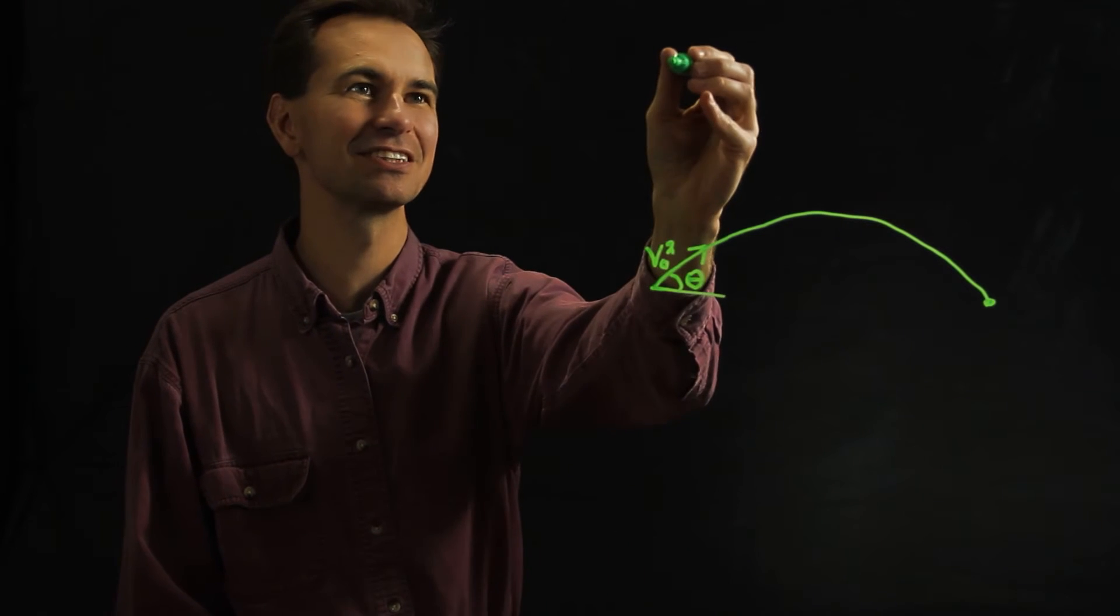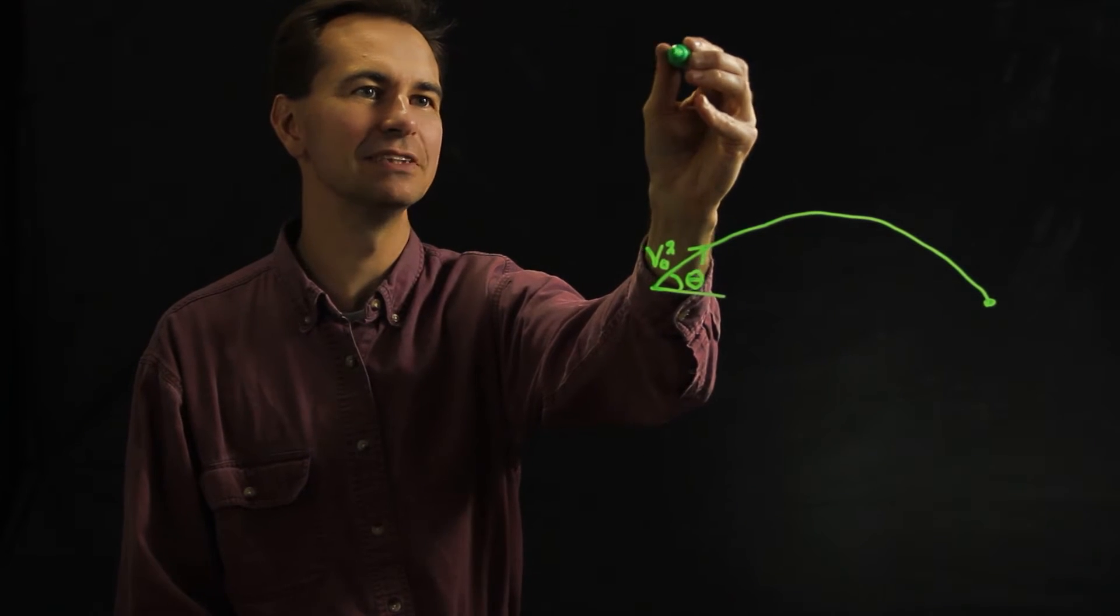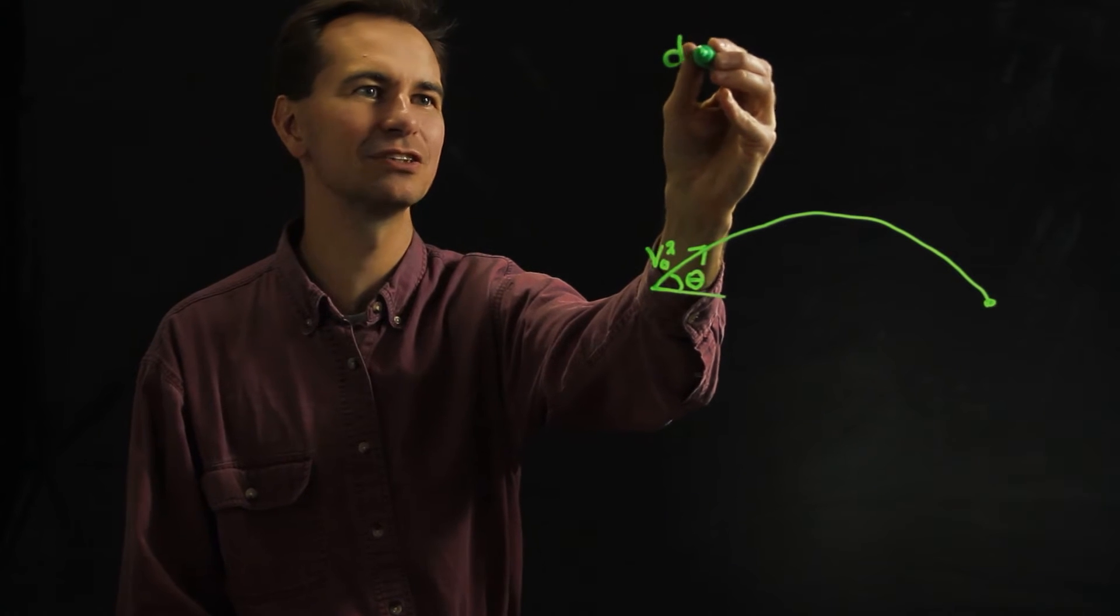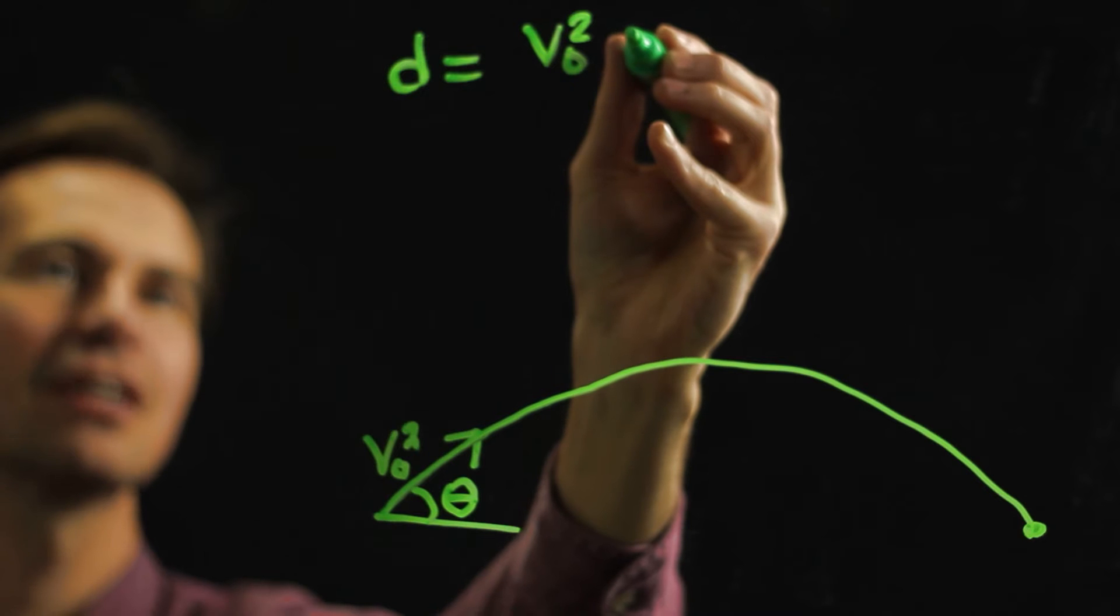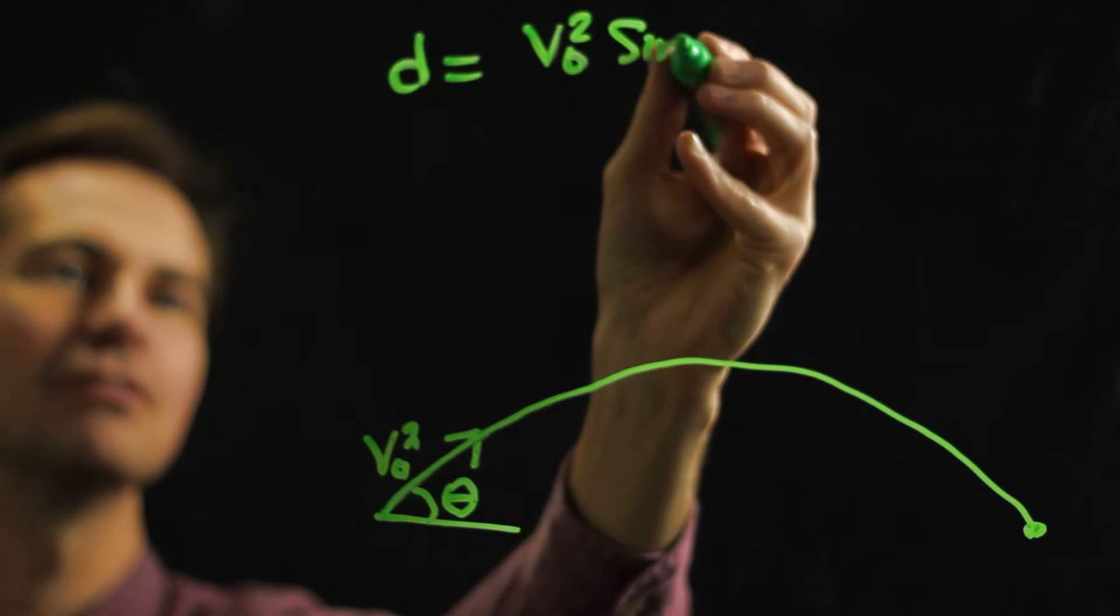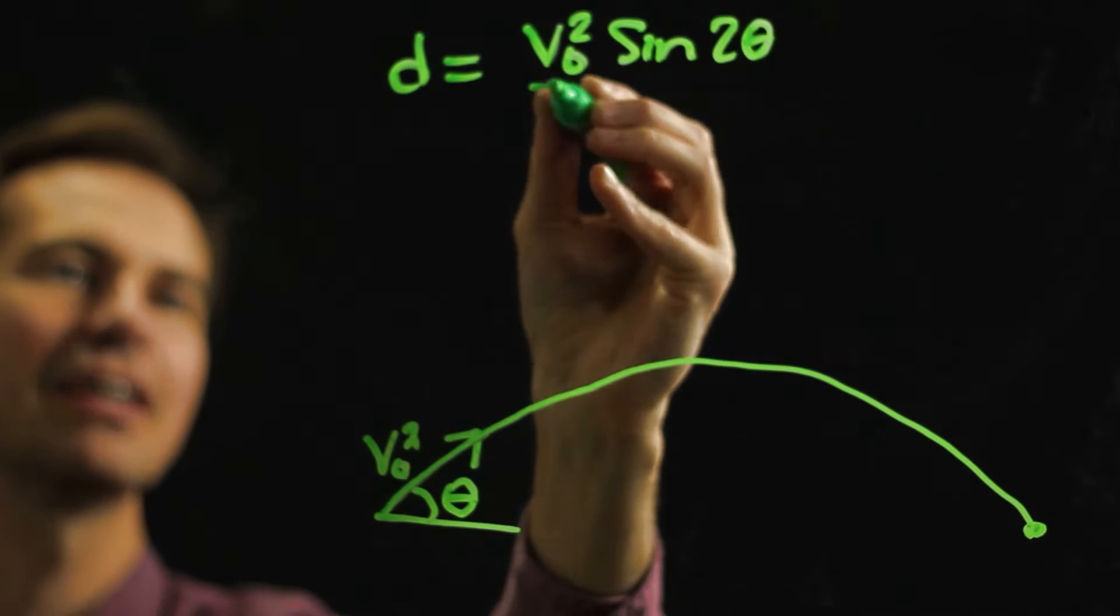You've probably seen an equation that looks like this. D, which is the total distance it travels, equals v naught squared times the sine of 2 theta divided by g.